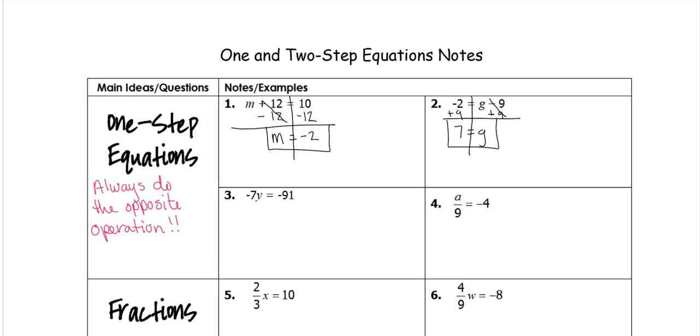On number 3, whenever you have a number by a variable, that's always multiplying. So the opposite would be to divide. So we're going to divide by negative 7. We're going to do it on both sides.